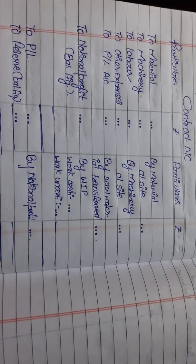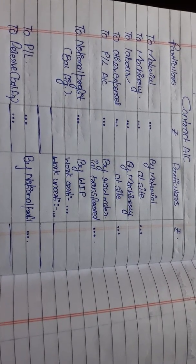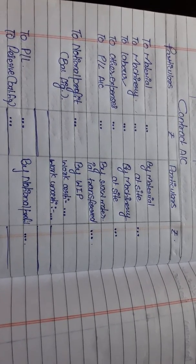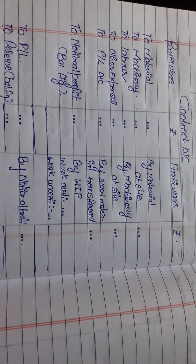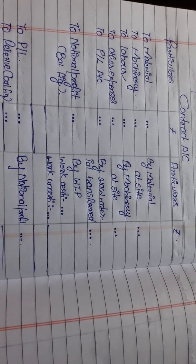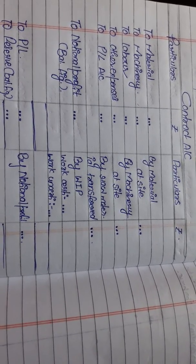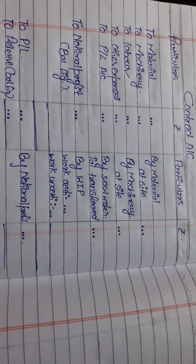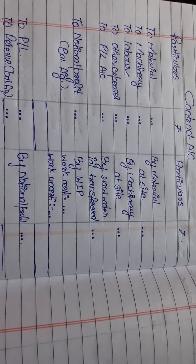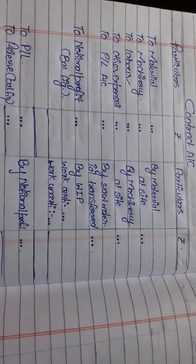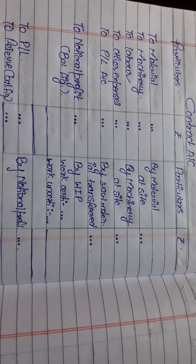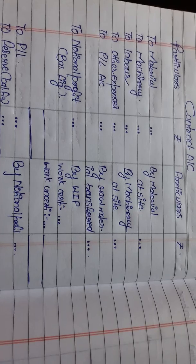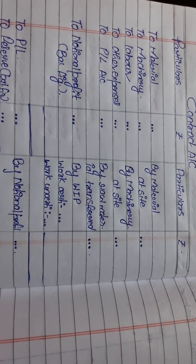Today we'll talk about contract account in cost accounting. A contract is an agreement between parties who undertake jobs such as construction of a dam or building. There are two people involved: the contractor, who agrees to perform the work, and the contractee, who gives the contract to the contractor.